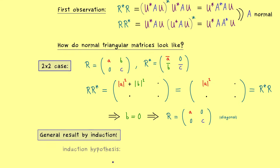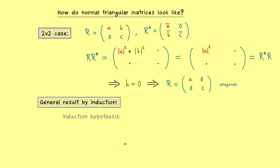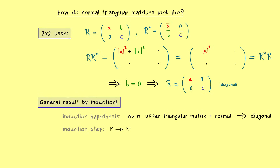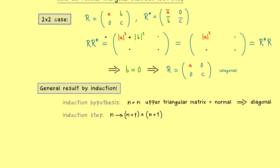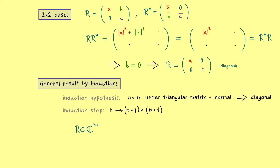At this point it might not surprise you that we can get the general result simply by induction. Induction works as follows: we assume the statement is correct for size n and prove it for n+1. The induction hypothesis is that an n×n upper triangular matrix which is also normal is necessarily diagonal. In the induction step we consider matrices of size (n+1)×(n+1). The idea is the same as in the 2×2 case: we reduce everything to the first component. We call the first entry a, and below a we only find zeros in the whole column. We can therefore write R as a block matrix, with a new matrix R̃ in the bottom-right corner, which is also an upper triangular matrix.